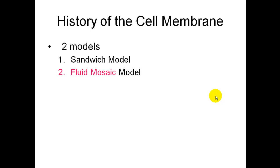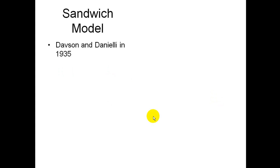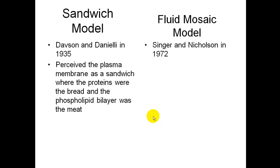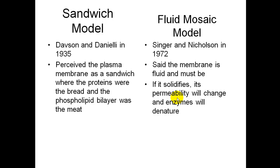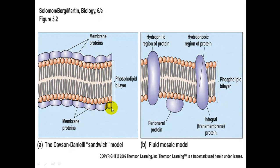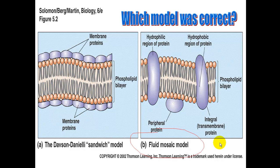The history of the cell membrane involved two models: the sandwich model and the fluid mosaic model — the fluid mosaic model being the current model. The sandwich model was developed by Davson and Danielli in 1935; they perceived the plasma membrane as a sandwich where the proteins were the bread and the phospholipid bilayer was the meat. The fluid mosaic model was developed by Singer and Nicholson in 1972. They said the membrane is fluid — if it solidifies, permeability will change and enzymes will denature. It is also a mosaic, meaning proteins are embedded within it. The fluid mosaic model is correct.